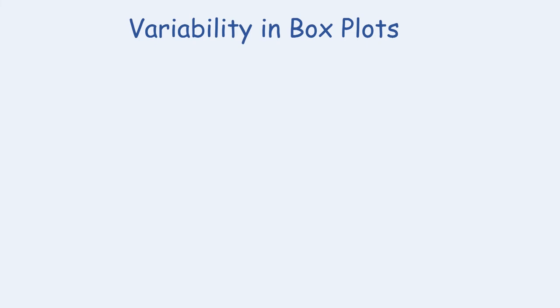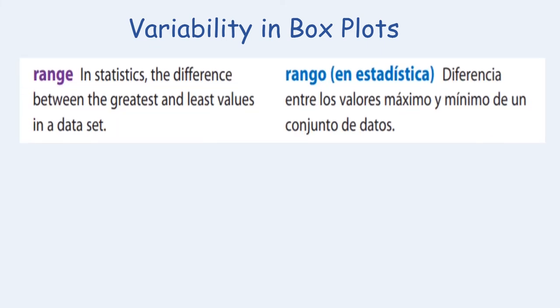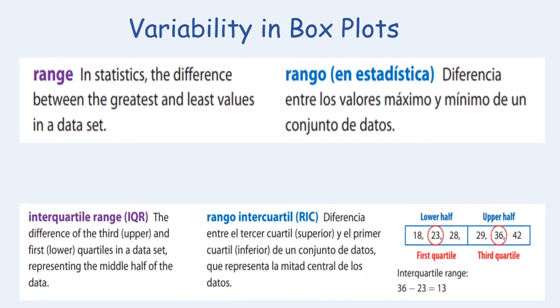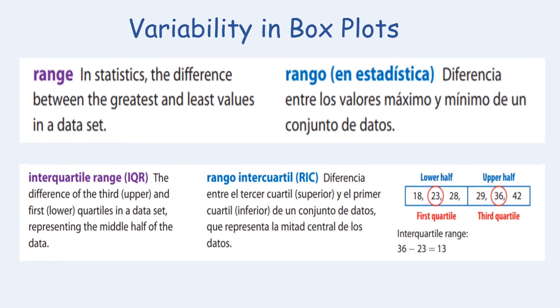Our outcome was also to summarize information from a box plot — we can refer to this as variability. There are two key ways to describe variability in a box plot. The first is the range: in statistics, the difference between the greatest and least values in a data set. The second is the interquartile range, or IQR: the difference between the third and first quartiles, representing the middle half of the data.